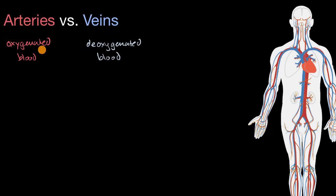Now, this is actually incorrect. It is many times the case that arteries are the ones carrying oxygenated blood and veins are carrying deoxygenated blood, but as we will see, this is not always the case.